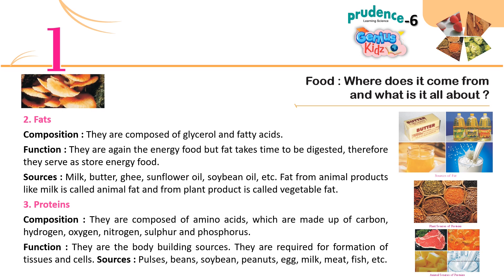Fat from animal products like milk is called animal fat, and from plant products is called vegetable fat. 3. Proteins — Composition: They are composed of amino acids, which are made up of carbon, hydrogen, oxygen, nitrogen, sulfur and phosphorus. Function: They are the body-building sources, required for formation of tissues and cells. Sources: Pulses, beans, soybean, peanuts, egg, milk, meat, fish, etc.